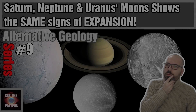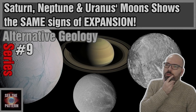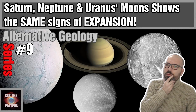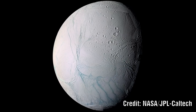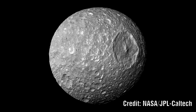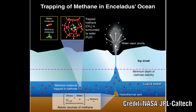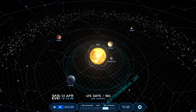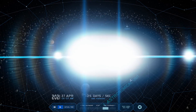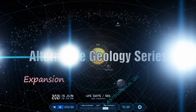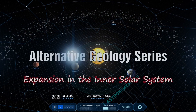In the previous episode we examined the moons around our outer planets and saw some good examples of expansion and equally some examples that show no expansion. These all had one thing in common — they are all icy moons. So let's now examine the inner solar system and see if we see the same signs as before.